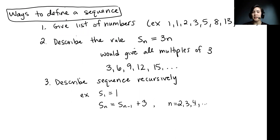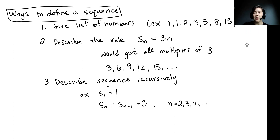Now let's define a few ways that we can describe a sequence. One way is we can just give a bunch of the terms. For example, we could have 1, 1, 2, 3, 5, 8, 13 like the Fibonacci sequence, or 2, 4, 6, 8, 10, and so on. We list enough numbers that people can get the pattern. That's one option for defining a sequence.